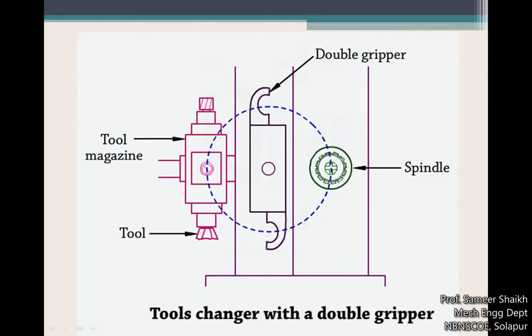This is basically the schematic of a tool changing arm with a double gripper — two grippers are available, which is what is called the double gripper mechanism. There are single gripper mechanisms also, meaning only one gripper is available. In this figure you can see a chain type of tool magazine, a double gripper, and the tool changing arm. This is the spindle of the machine where the actual machining takes place. The tools are coming out perpendicular to the screen. The tool changing arm pivots at the center and rotates about that center point.